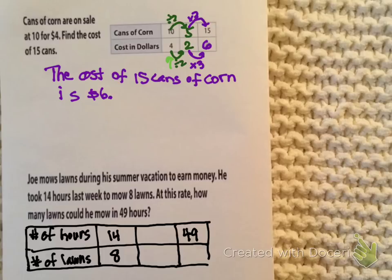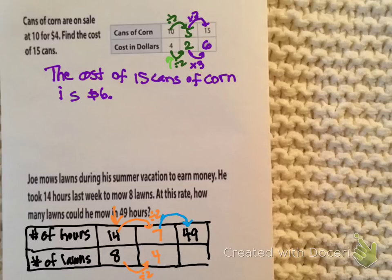I cannot multiply 14 by anything to get to 49, so I have to look for another avenue. Looking at the column, I notice they're both even, so I'm going to scale back by dividing by 2. 14 divided by 2 is 7, and 8 divided by 2 is 4. Then I notice that 7 can go evenly into 49, so I'm going to scale up by multiplying by 7, top and bottom. 7 times 7 is 49, and 4 times 7 is 28.